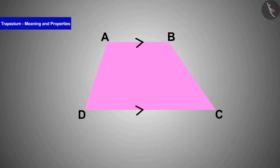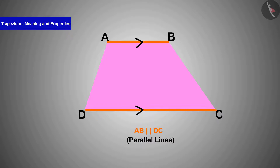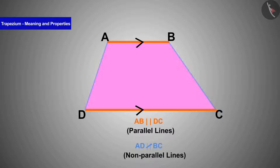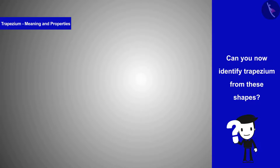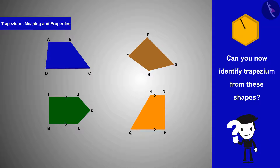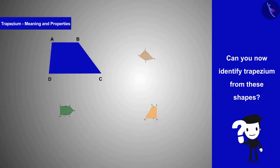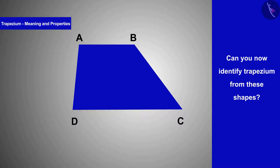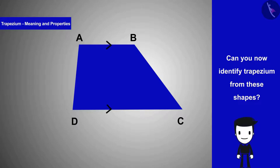In a trapezium, one pair of sides is parallel and the other pair is non-parallel. Looking at the blue figure: it is a quadrilateral with a pair of parallel sides, so it is a trapezium.